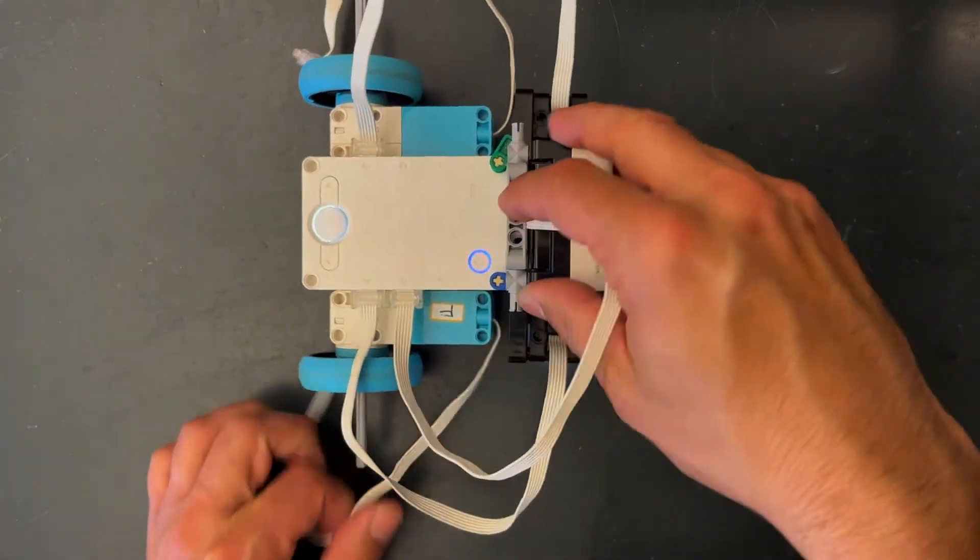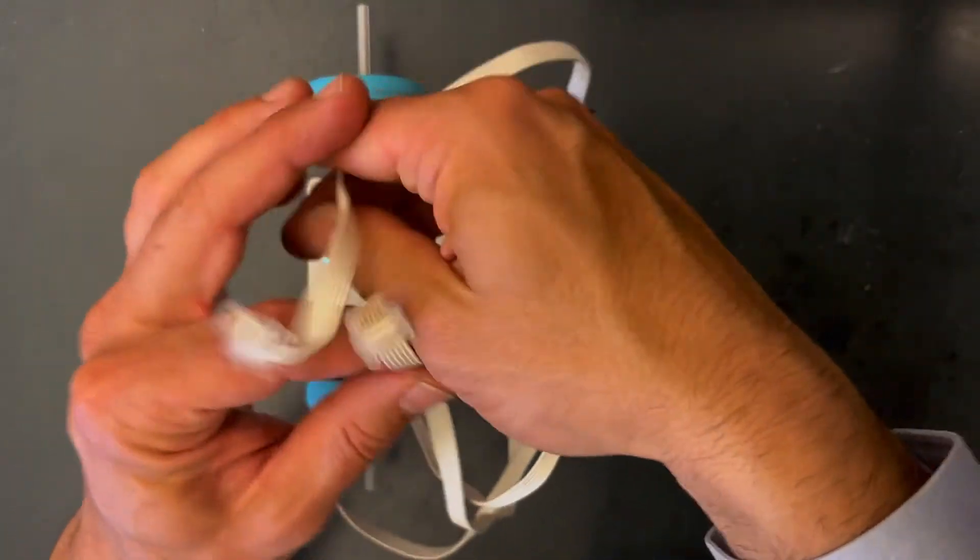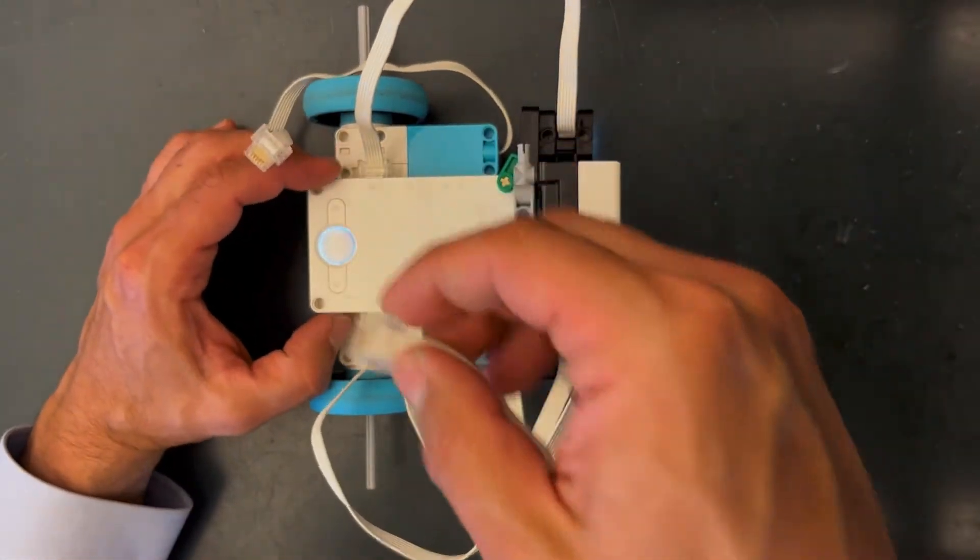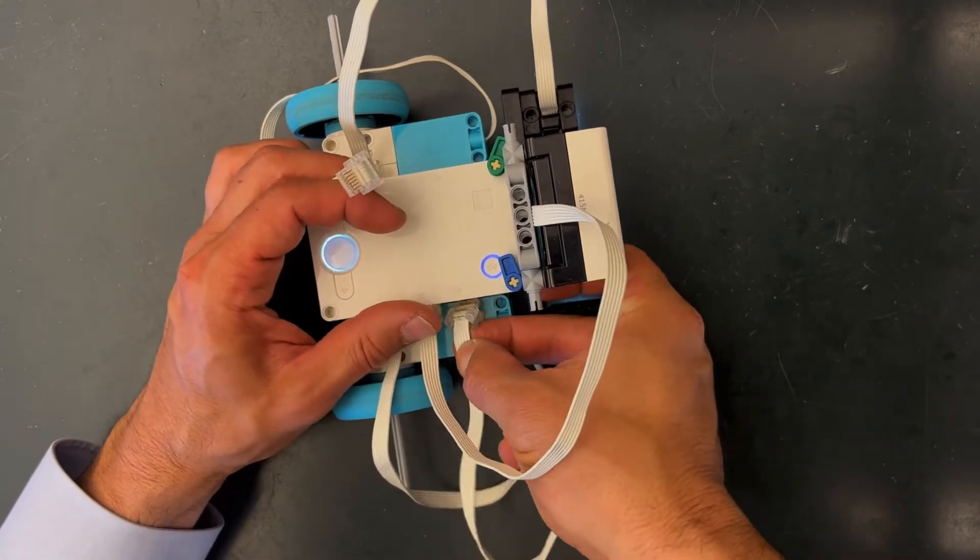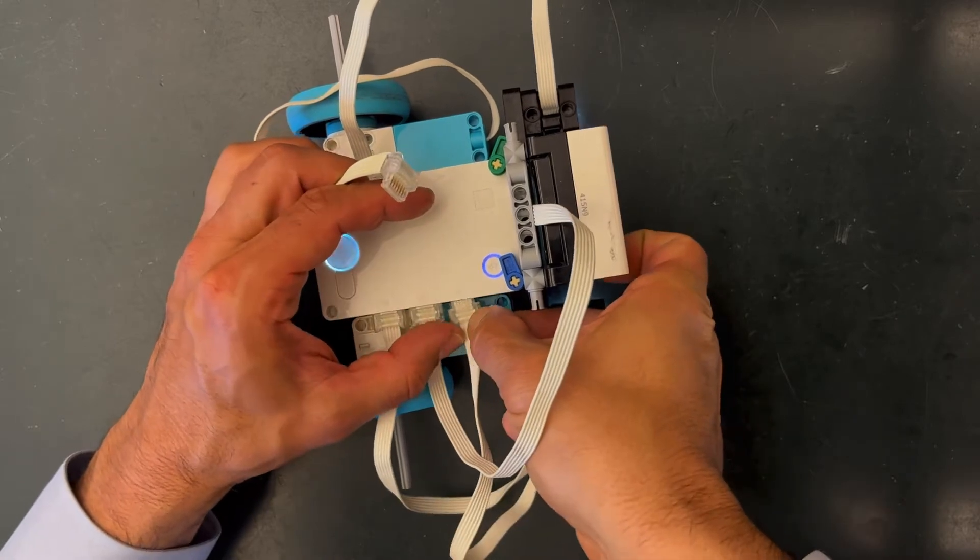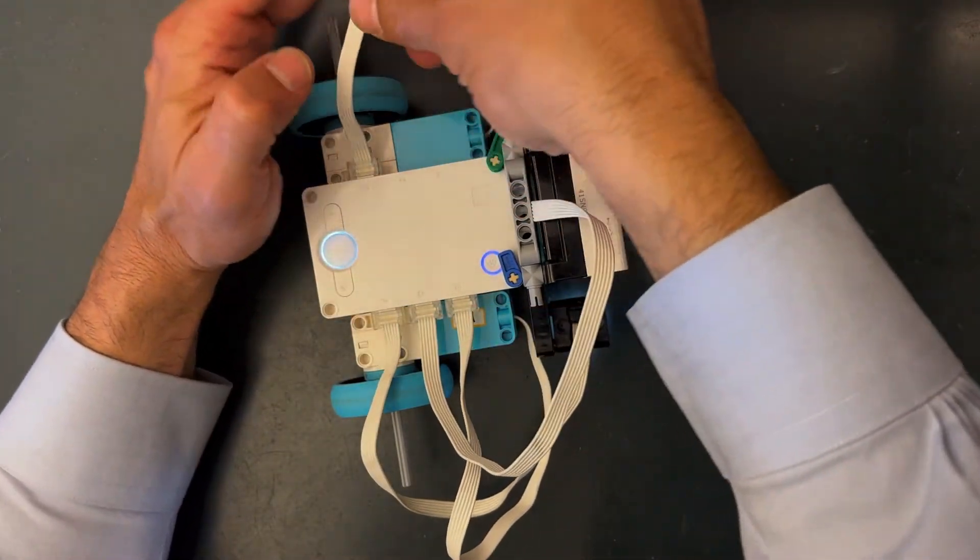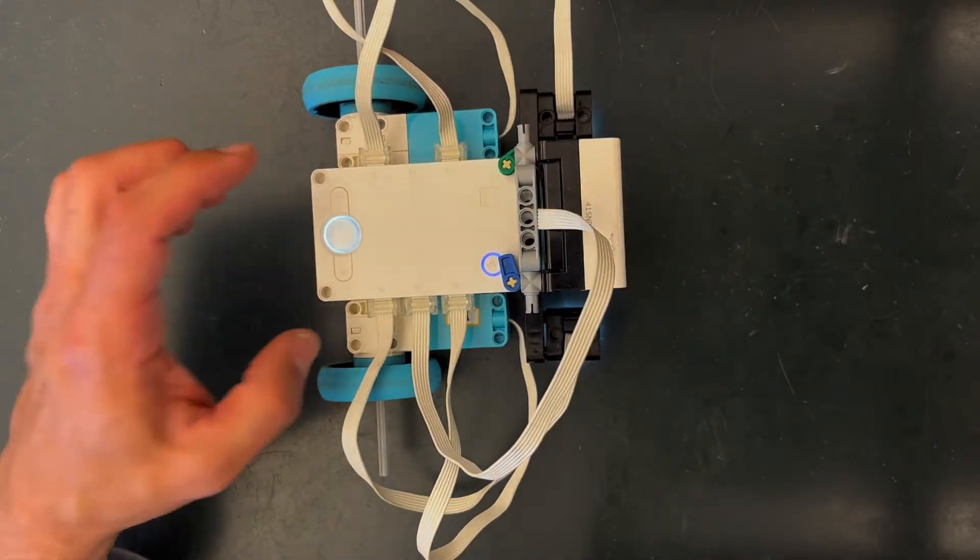And then finally we have our two motors. Motor one or two. All right so the right motor we're going to connect to E over here. That's right B. And the left motor we're going to connect to A. So left A right B.